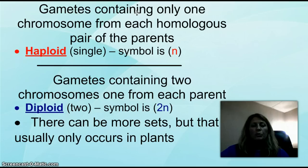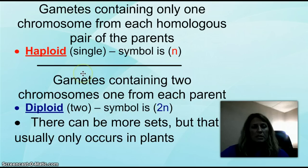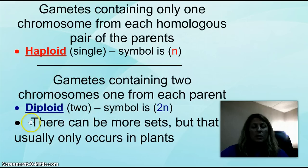Gametes containing only one chromosome from a homologous pair — so one shoe — are called haploid, symbolized by a lowercase n. When talking about two chromosomes — a pair of shoes — that is diploid, symbolized as 2n. 'Di' means two. For humans, the haploid egg would have 23 chromosomes, the sperm would have 23 chromosomes, and all the cells in your body have a total of 46 chromosomes, not including the sex chromosomes.